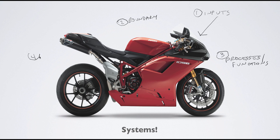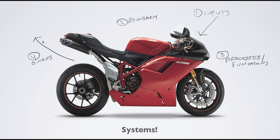The fourth and final factor we need to talk about when thinking about systems are outputs that leave that system. In the motorcycle, emissions would leave, or heat caused by the friction of the tire meeting the road would be an output that leaves the boundary of the system.